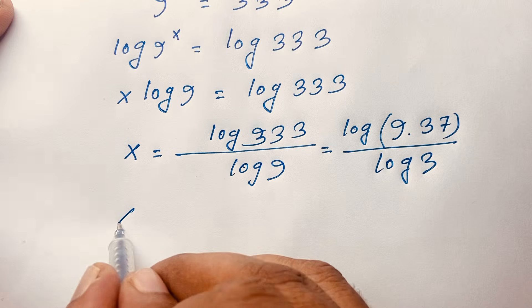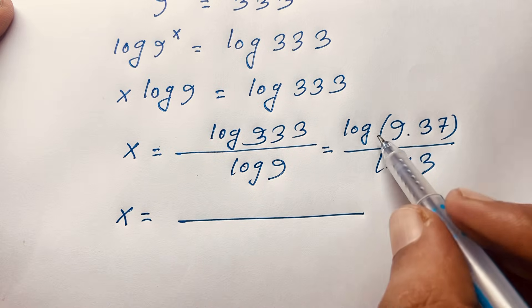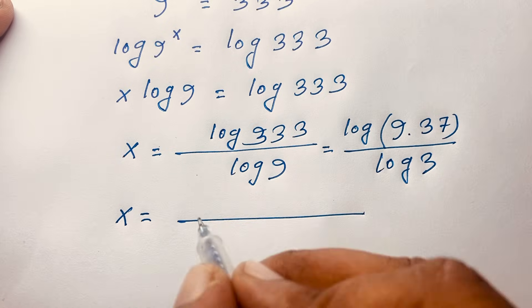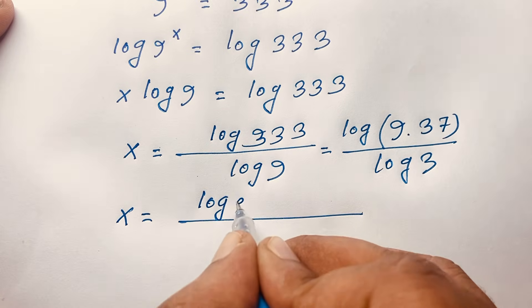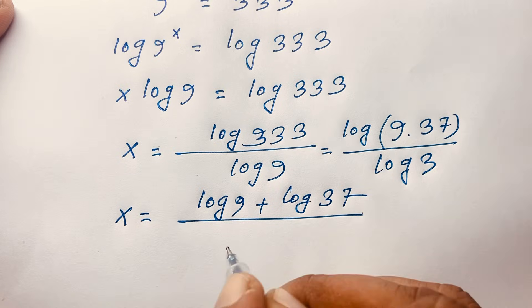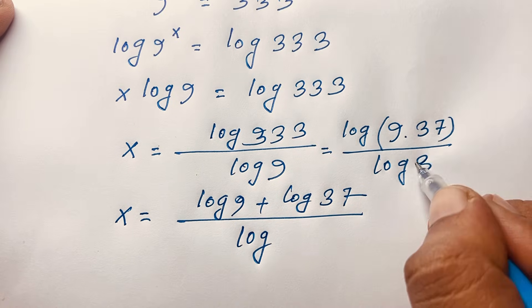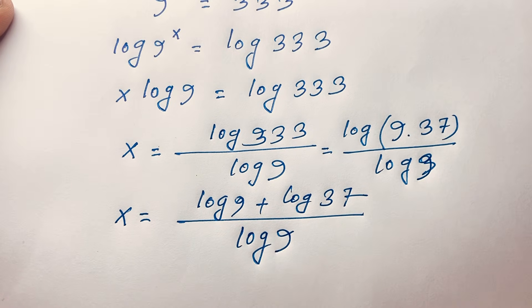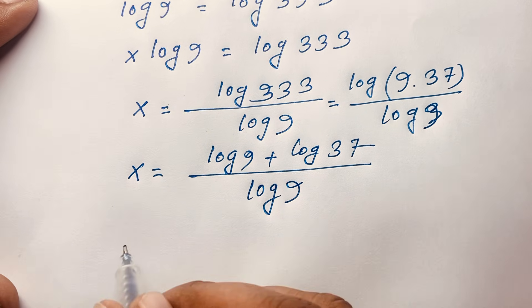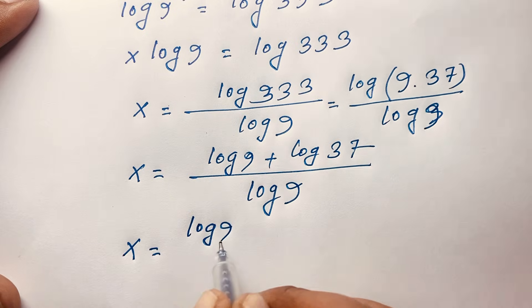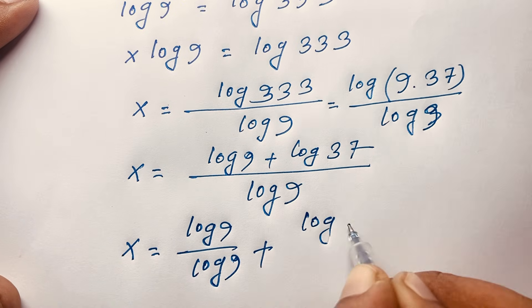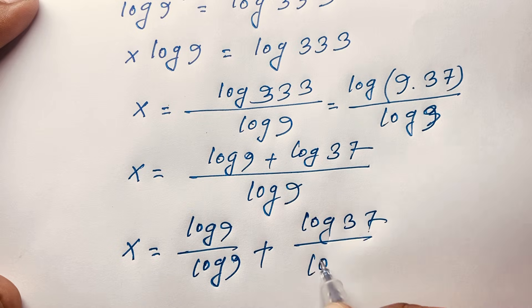At this moment, using the logarithm product rule — log(AB) equals log A plus log B — we can write this as log 9 plus log 37 over log 9. If I separate this fraction, we find x equals log 9 over log 9 plus log 37 over log 9.